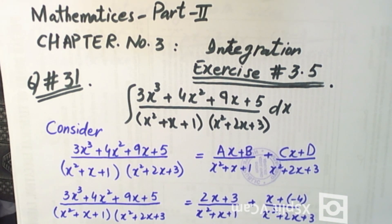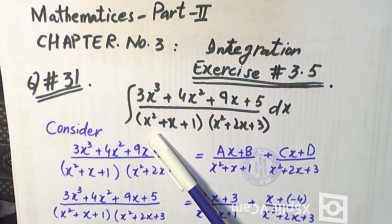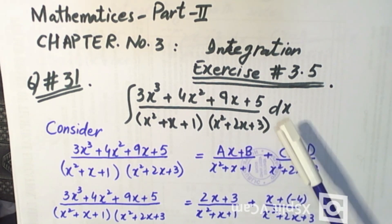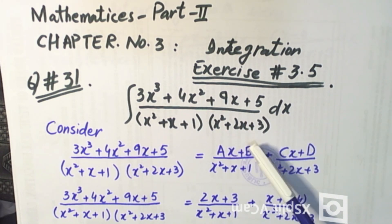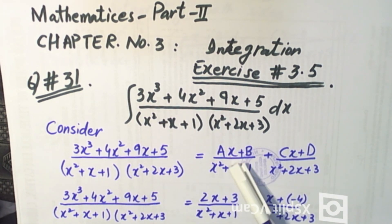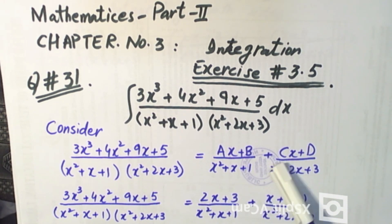Question number 31: integral of (x³ + 4x² + 9x + 5) over (x² + x + 1)(x² + 2x + 3) dx. This is the integral we need to solve.